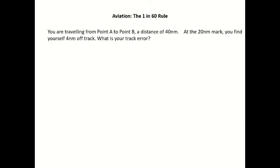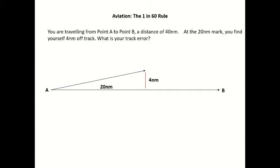So, first example — let's get stuck into it. You're travelling from point A to point B, a distance of 40 nautical miles. At the 20 nautical mile mark, you find yourself 4 nautical miles off track. What is your track error? With all of my examples, the one thing I say to all of my students is get your pen or pencil out and start mapping this out — start mud-mapping it. So you're flying from point A to point B, and at the 20 nautical mile mark you find yourself 4 nautical miles off track.